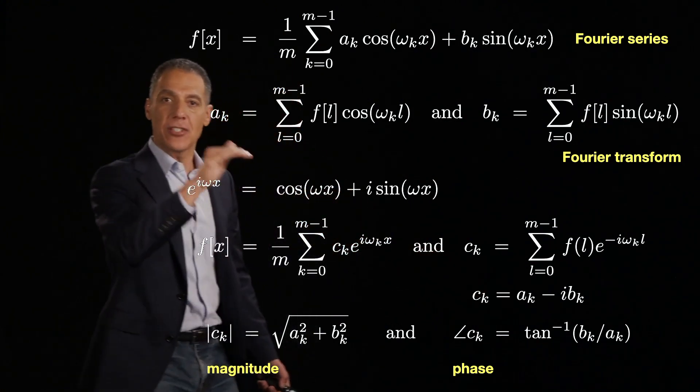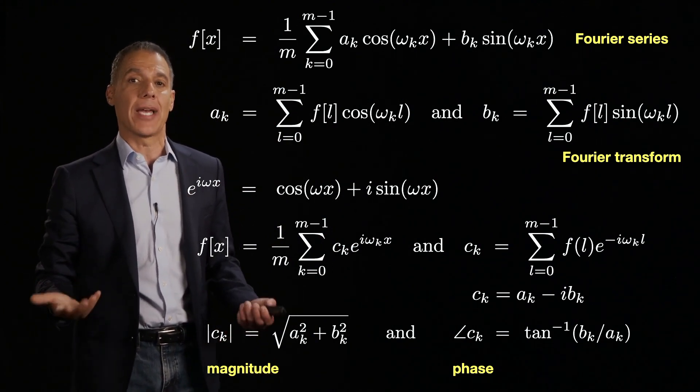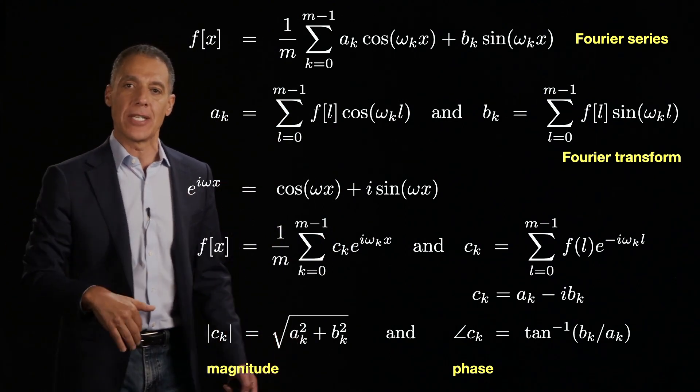In the same way that the weights on the canonical basis tell us what the value of the signal is, the weights on each of those cosine terms and sine terms of different frequencies tell us something about the underlying representation, which we'll be seeing in a little bit.